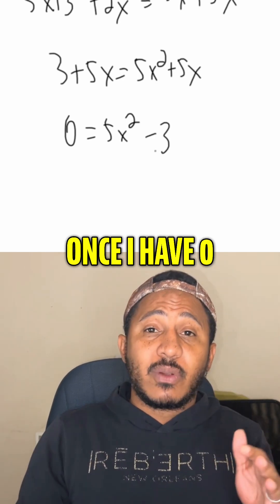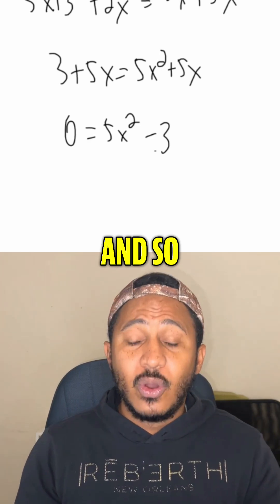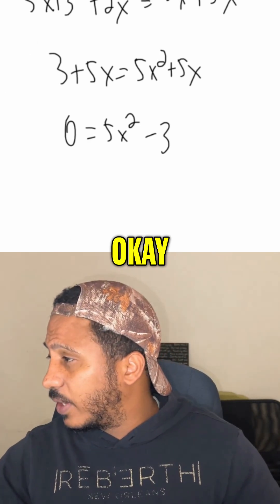But now it's a simple quadratic, right? Once I have 0 on one side, there's no second term, no middle term, no x term. And so we can just add 3 to both sides.